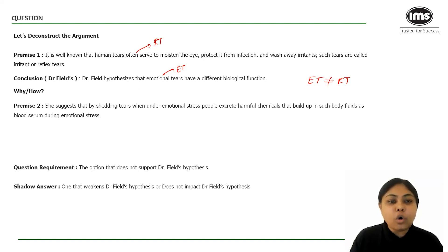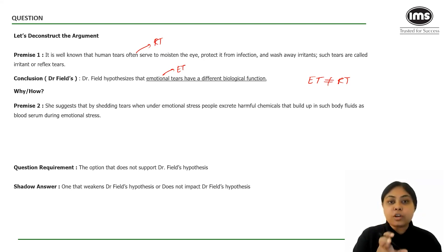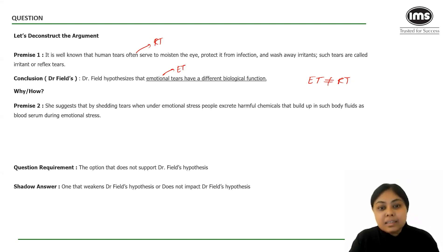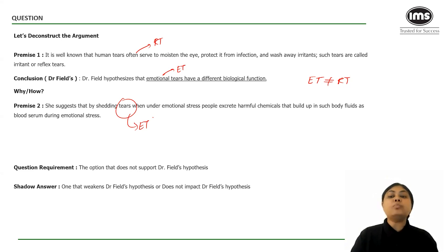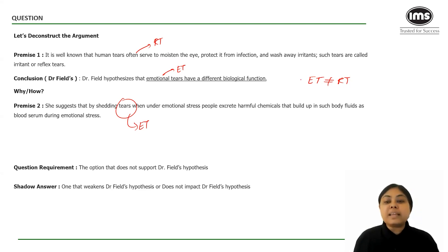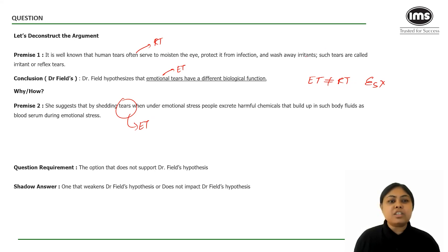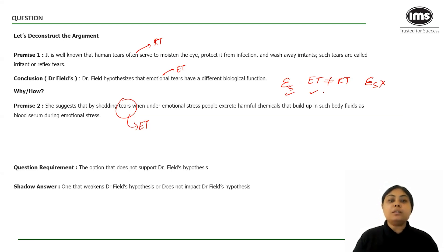The last sentence is premise two: she suggests that by shedding tears under emotional stress, people excrete harmful chemicals that build up in body fluids like blood serum during stress. So Dr. Field is telling us that reflex tears have nothing to do with emotional stress — they come from external irritation — while emotional tears occur when there is stress.